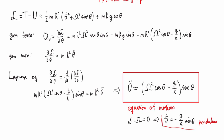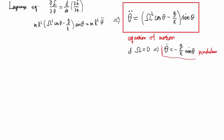The second part of the problem was to find all the equilibria in the equation of motion. To find the equilibria, we normally set the forces to zero — forces are zero at an equilibrium.